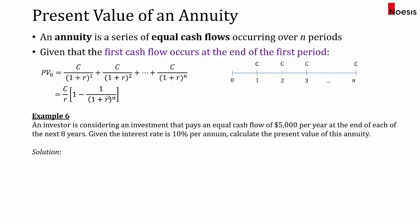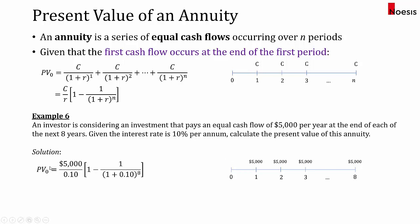In Example 6, an investor considers an investment paying equal cash flows of $5,000 per year at the end of each year for the next eight years, with an interest rate of 10% per annum. The present value is 5,000 divided by 0.10, multiplied by [1 − 1 / (1.1)^8], which gives $26,674.63. That is the value of this investment to the investor.